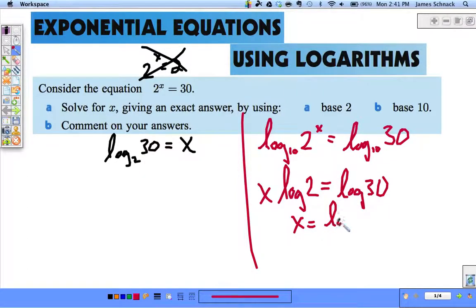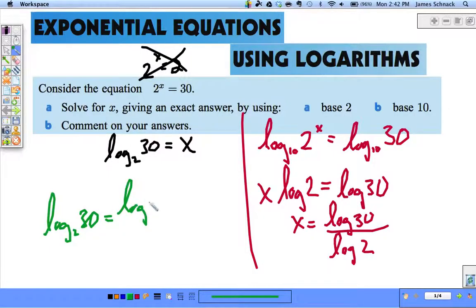So x equals log 30 divided by log 2. And no, the logs don't cancel out here. That's a big no-no. Comment on the answers: log base 2 of 30 equals log 30 divided by log 2. This is called the change of base rule.